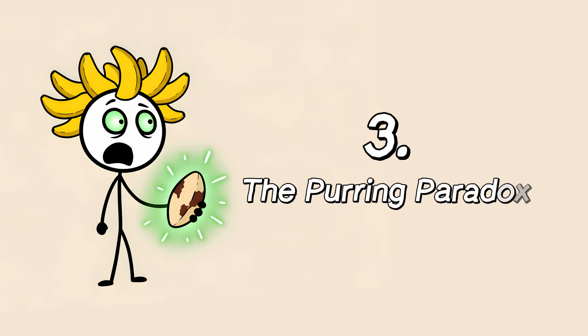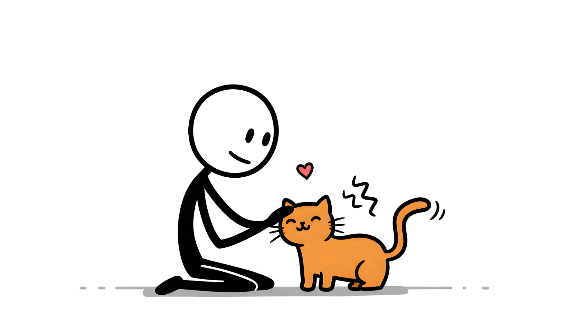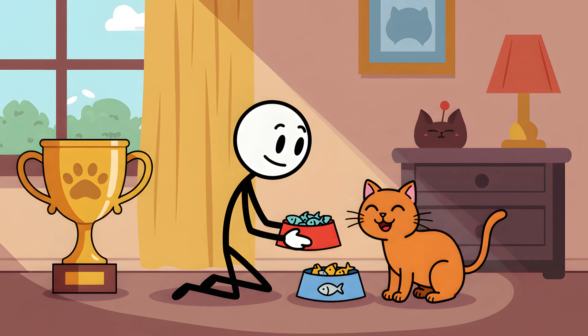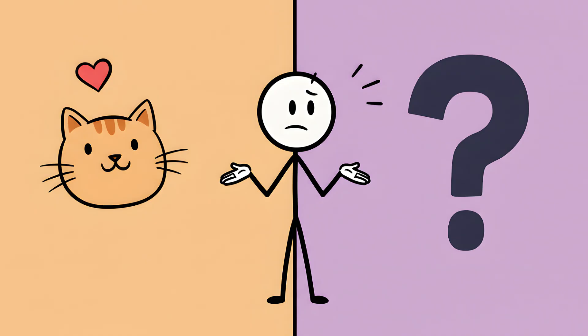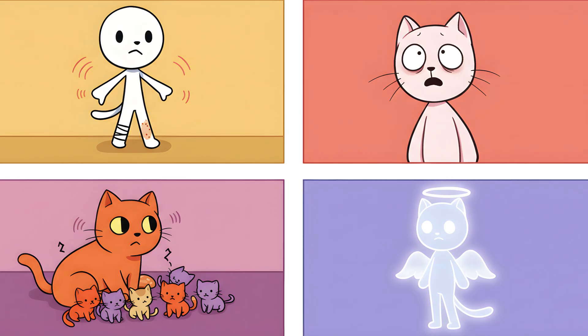Number 3. The Purring Paradox. You're petting a cat. It's happy. It's content. And it's making that sound. That deep, vibrating rumble that seems to come from its very soul. The purr. We associate it with feline happiness. The ultimate sign that you're doing a good job as a human servant. But here's the weird part. Cats don't just purr when they're happy. They purr when they're in great pain. They purr when they're terrified. They purr while they are giving birth. And they purr when they are dying.